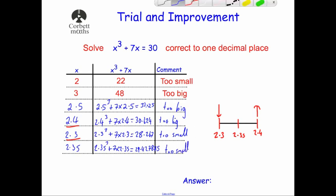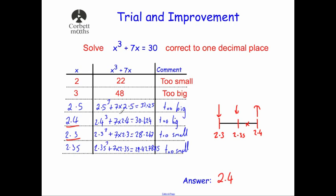So if we look at our checker, 2.35 is too small. If this is too small, and 2.3 is too small, and 2.4 is too large, our answer must be on the right-hand side of the line — between the middle and the 2.4 end. That means the answer is closer to 2.4 than it is to 2.3. So to one decimal place, our answer will be 2.4. And that's how you do a trial and improvement question.